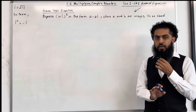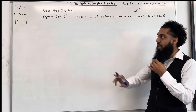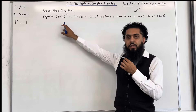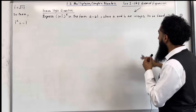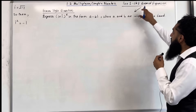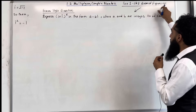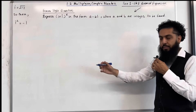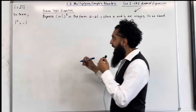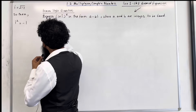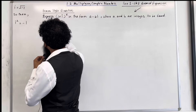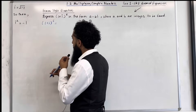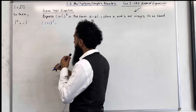We can quickly expand this using the binomial expansion formula. Please have a look at my playlist, Pure 1 Chapter 8 Binomial Expansion. Anyways, let's begin. So we have (1 + i) to the power 6, and I'm going to expand it using the binomial expansion formula.